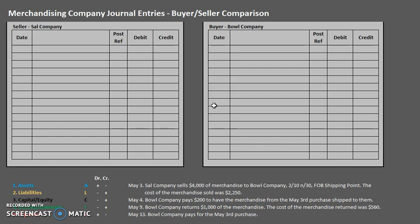The method we are going to be going over today is a combination of the net method and something new that we haven't seen in too many academic accounting textbooks. Before you get started, keep in mind that we are still doing journal entries, so those three important rules still apply: we still need at least one debit and at least one credit, debits will still come before credits, and our debits must equal our credits.